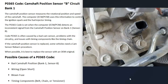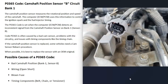Sometimes you can just swap out that sensor and the vehicle will run okay, and other times it won't — it's going to vary. Just keep in mind that if you do swap out the camshaft position sensor, there is sometimes a relearn procedure required. The next possible cause is some kind of wiring issue — an open circuit, a short, or a bad connection. Anything wrong with the wiring is going to cause the same symptoms as a bad sensor.